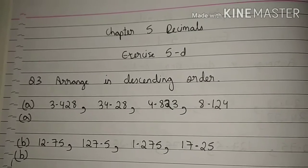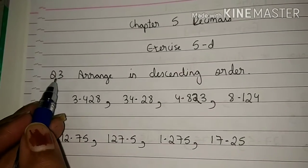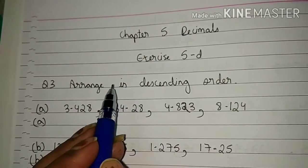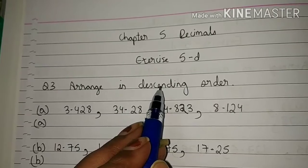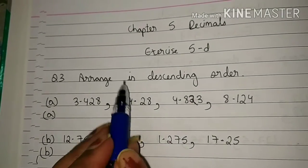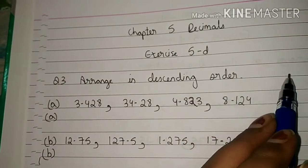Today we will study question number 3 of Exercise 5D. Let's start your maths class. Today we will do question number 3, i.e. arrange in descending order. In this question, we are going to arrange the given decimal numbers in descending order, i.e. from the greatest to the smallest.